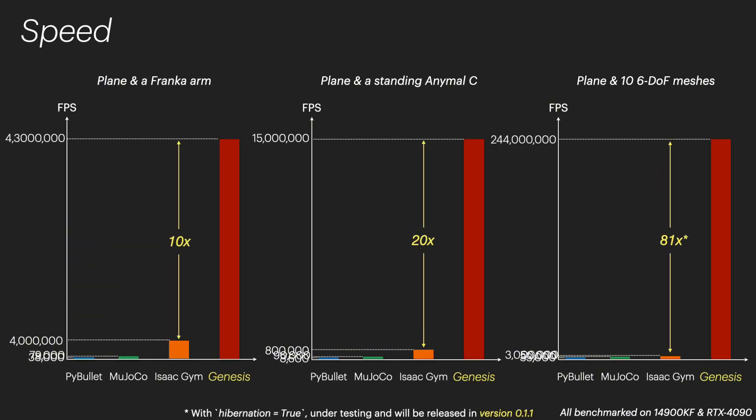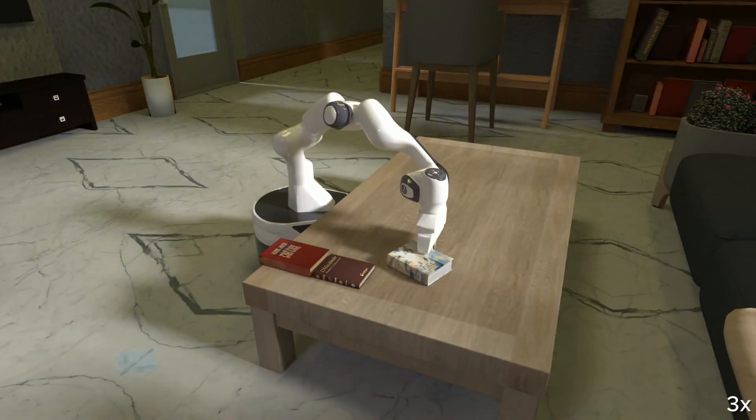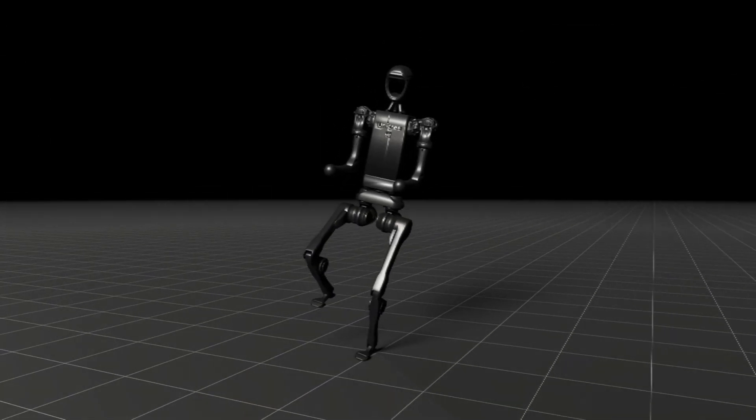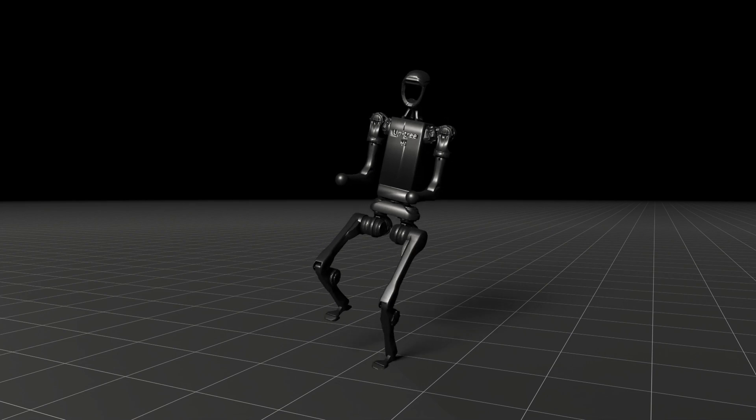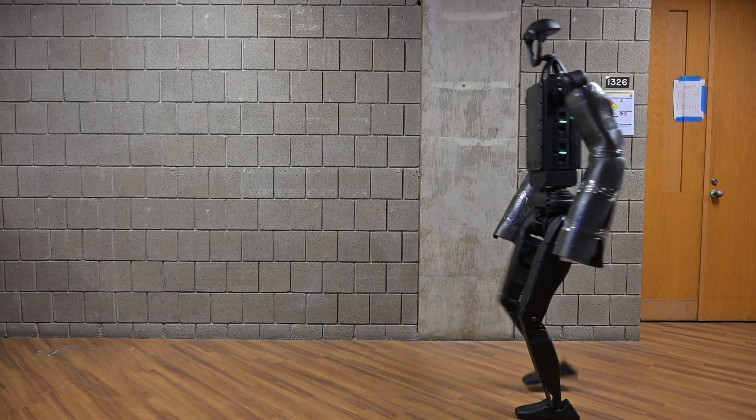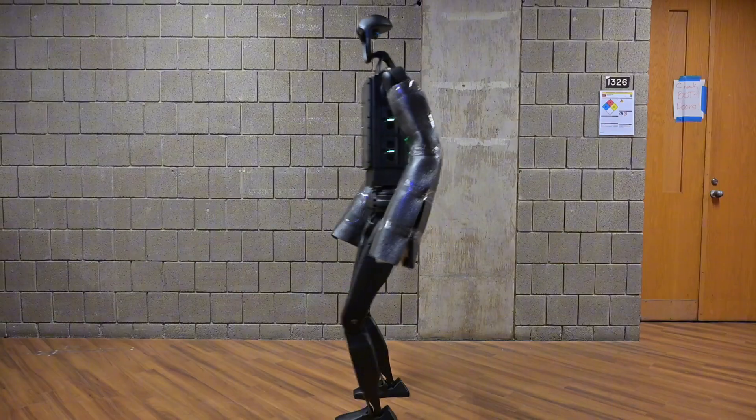Genesis is the groundbreaking open-source physics engine that's revolutionizing robotics, AI, and the way we simulate the physical world. Today, we're diving into how Genesis is not just a platform, but a game-changer for robotics and embodied AI innovation.